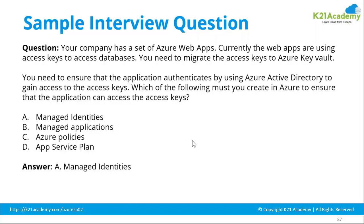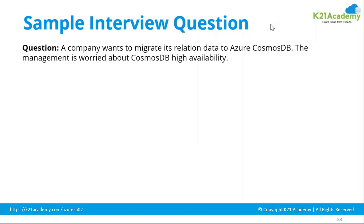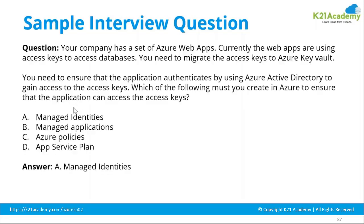All of you got it right. App service plan is not relevant because it deals with computational requirements like staging slots or traffic manager options — it won't help with authentication. Azure policies are not required here because we are talking about communicating between two services. Managed application is not an authentication mechanism. So the rest of the three options are irrelevant. If you understood the question correctly, you would not pick B, C, or D. This was a straightforward question.